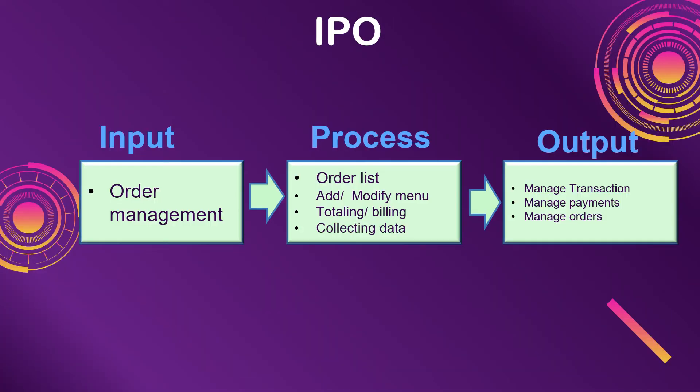In this slide, this is the IPO chart. For the input: order management. For the process: order list, add, modify menu, totalling and billing, and collecting data. For the output: manage transaction, manage payments, and manage orders.